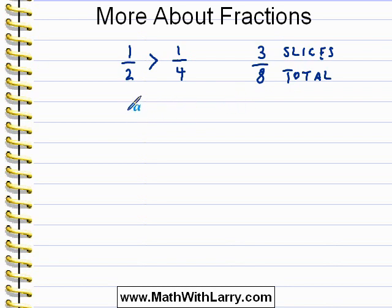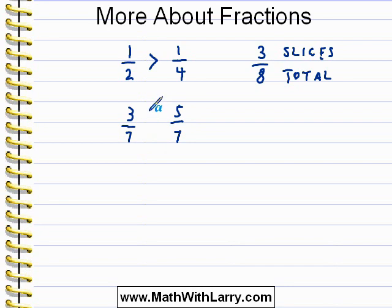Now to compare fractions, we need for them to have the same denominator. Remember, the denominator is the bottom number and the numerator is the top number. Let's take a look at these fractions: 3 sevenths and 5 sevenths. They have the same denominator — the same number of equal parts, which is 7. In this case, it's very easy to see that 3 sevenths is less than 5 sevenths, because 3 is fewer parts out of 7 than 5 is.